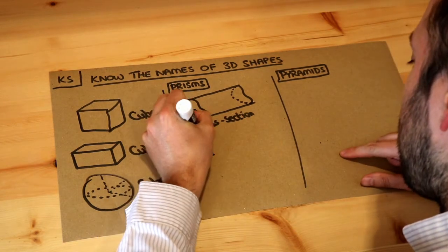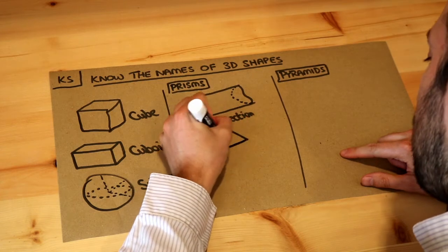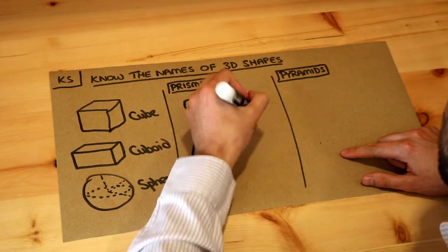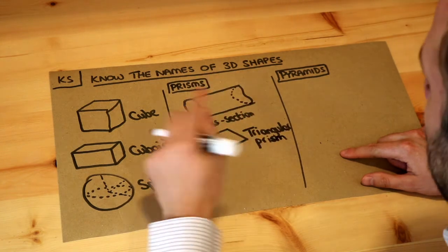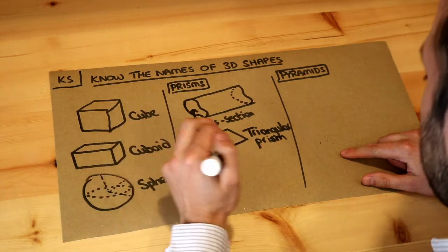If you have like a triangle, so imagine you forced your Play-Doh through a triangle shape. This is known as a triangular prism, not surprisingly. And then if the shape there was a pentagon, it would be a pentagonal prism etc.